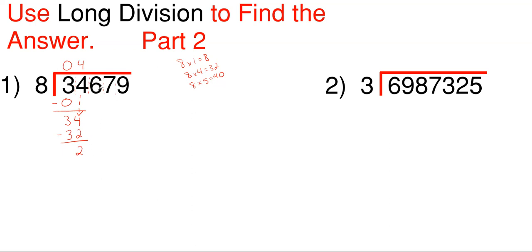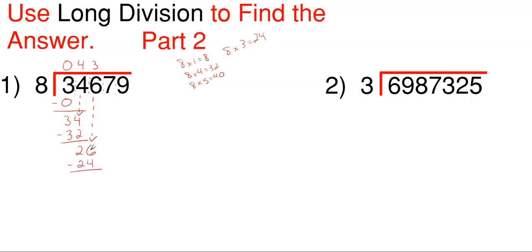And then once again, just move to your next number — we're going to drop down that 6, and now this becomes 26. Well, how many times does 8 go into 26 without going over? 8 times 3 gives me 24, and 8 times 4 gives me 32, so it's going to have to be 3. We place that 3 directly above the number we just dropped. So 8 times 3 gives me 24, and then we subtract: 26 minus 24 gives me 2.